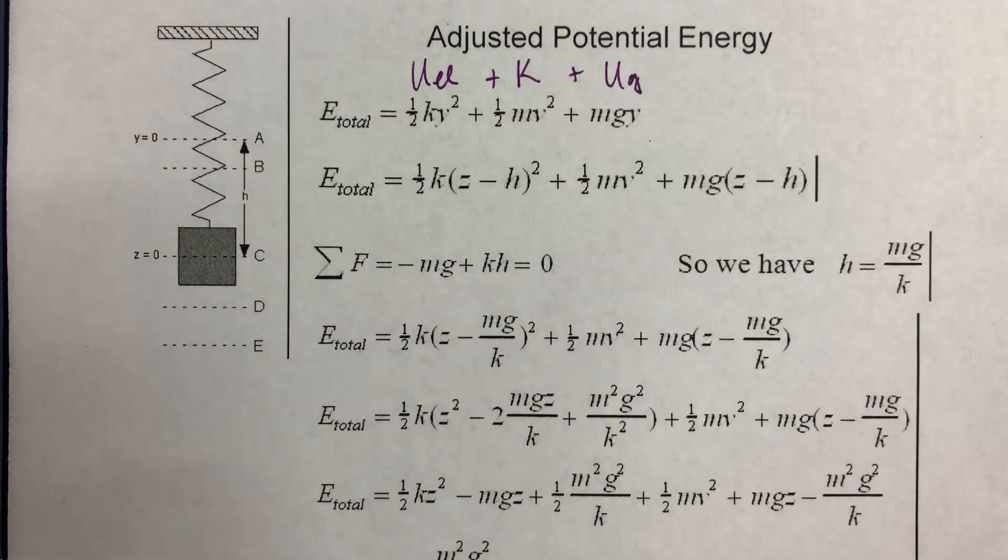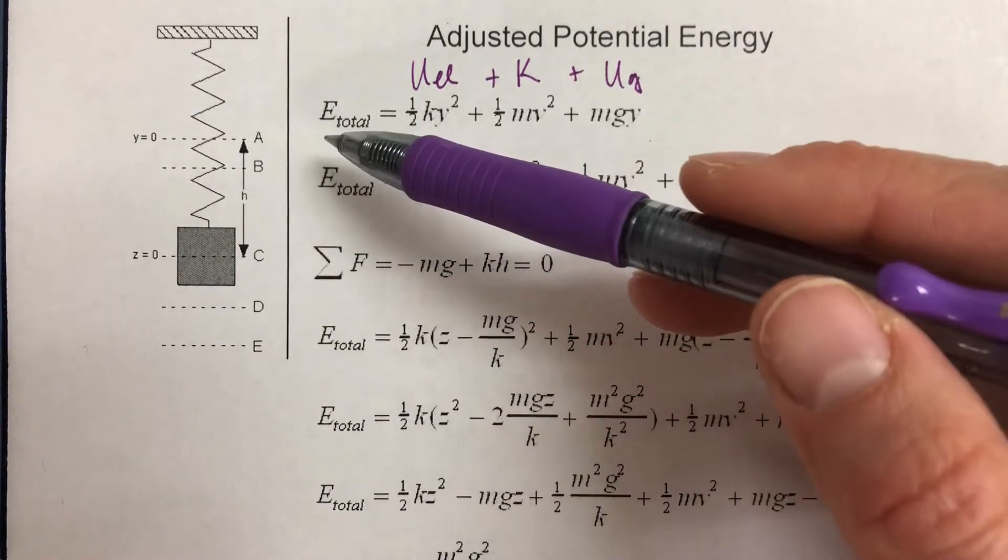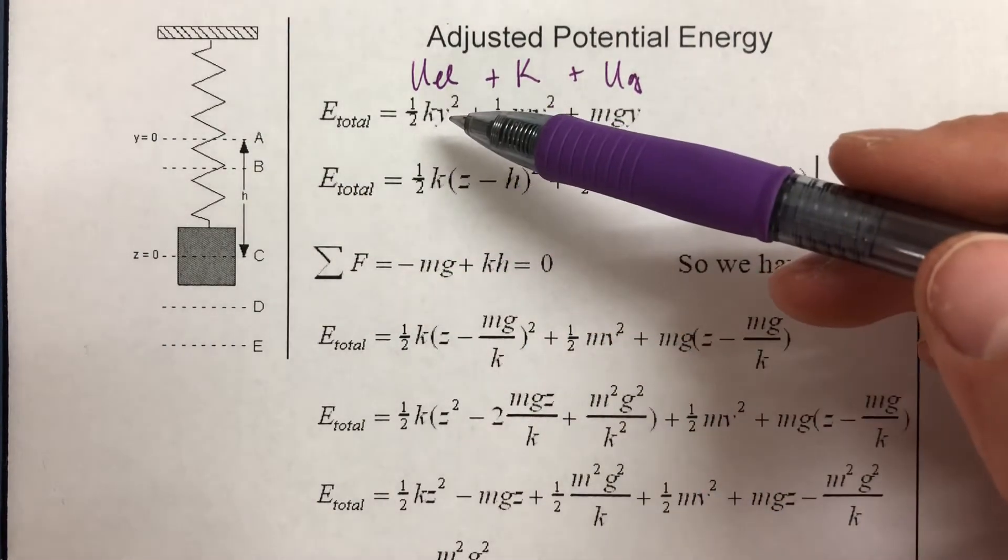It doesn't really matter where gravitational potential energy is measured from, because remember only changes in gravitational potential energy are going to matter. So we just choose the same position as the spring potential energy.